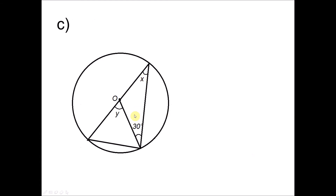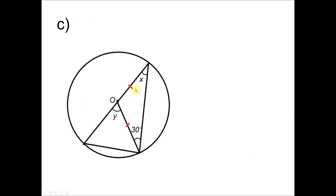Question 1C: To find X, notice that two lines shown are radii of the circle, so they have the same length, forming an isosceles triangle. This means the two base angles are equal. Therefore X equals 30 degrees.